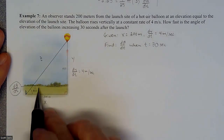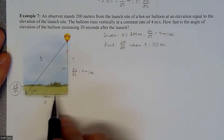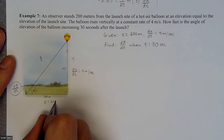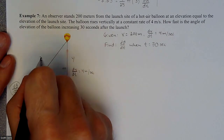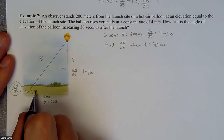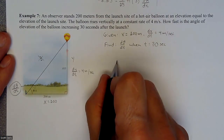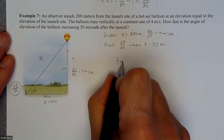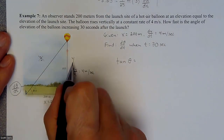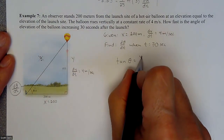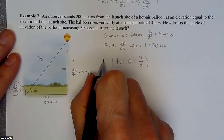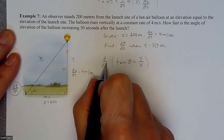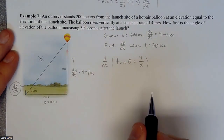We have two pieces of information: x is 200, and we have the rate of y changing. We don't know anything about z, so we won't use it. The trig function that relates x and y — without z — is tangent. So tangent of theta equals y over x, and we'll take the derivative of that with respect to time to pull in d theta dt.